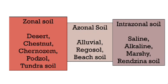Zonal soils are those which we can find in a particular place, like desert, chestnut, Chernozem, podzol, and tundra soil — i.e. found in the tundra region. Azonal soil specifically includes alluvial, regosol, and beach soil.